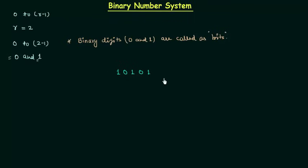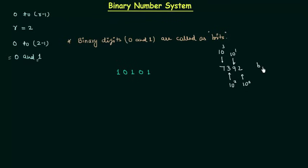In the last presentation, we represented the decimal quantity 7392, where the weight of the 1s position is 10 raised to power 0, the 10s position is 10 raised to power 1, and so on up to 10 raised to power 3. Binary numbers are also weighted numbers. Since the base here is 2, the weight of each position is 2 raised to the corresponding power: 2⁰, 2¹, 2², 2³, and 2⁴.